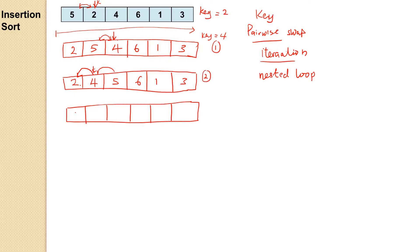At the next step it checks six and compares six with five — everything is okay, no swap needed. So the key moves and is now six. The key always moves in the same position as the element. When it checks key six compared with five, it doesn't do a swap. So it comes to the next iteration, iteration three. At this point, the key is one.